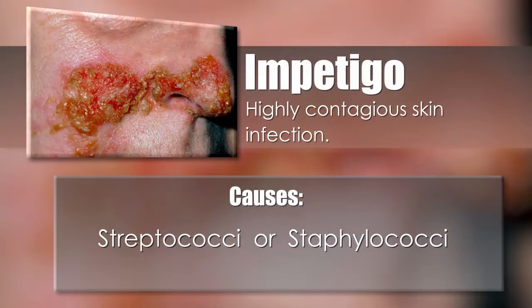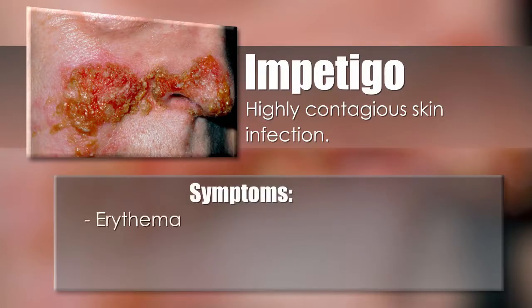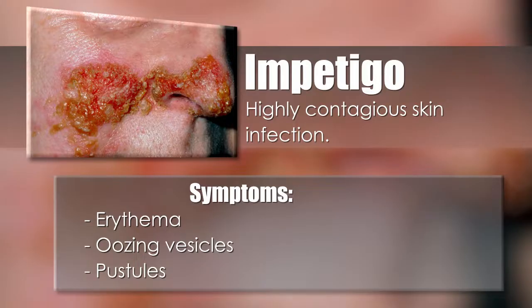Impetigo is a highly contagious skin infection usually caused by streptococci or staphylococci organisms. Symptoms include erythema, oozing vesicles, pustules, and the formation of yellow crusts.